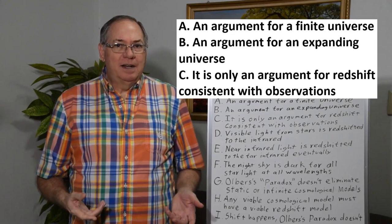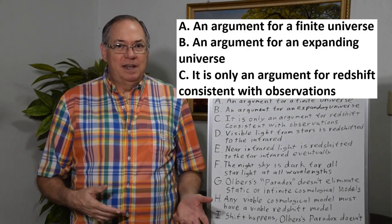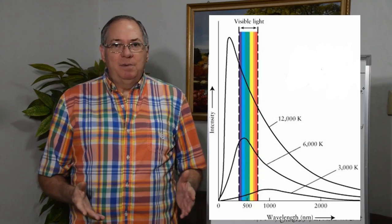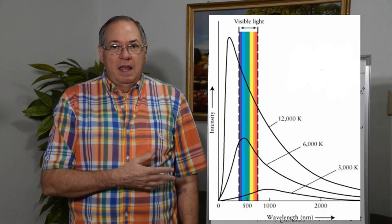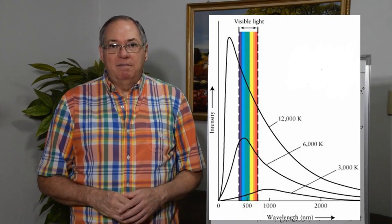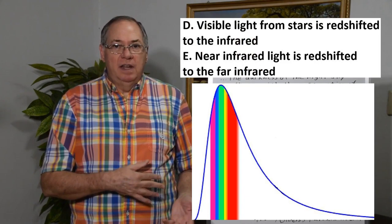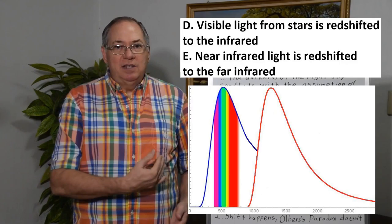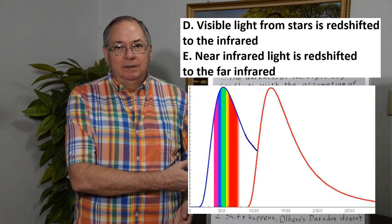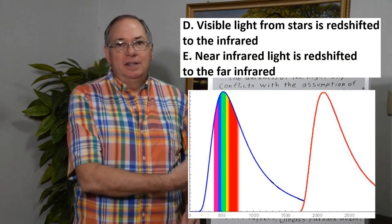Olber's Paradox is only an argument for Redshift — that Redshift must exist — which it already does, because the observations at this point are irrefutable. It's very simple to see: if you look at a spectra of starlight, you can take a black body temperature from 3,000, 6,000, or 12,000 Kelvin and look at the spectra. It has a certain amount of light in the visible range, some ultraviolet and infrared. But as it gets redshifted, eventually all visible light shifts completely out of the visible range, and then further from infrared to far infrared, and so on.